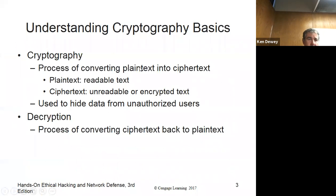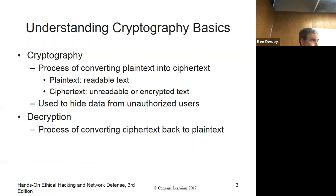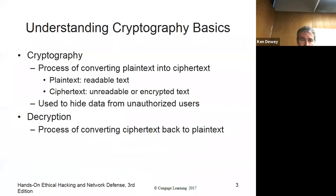The process of converting plain text to ciphertext — plain text is the text we can see, the stuff we can read like in a book. Ciphertext is the jumbled-up version of everything.